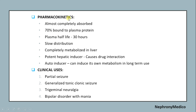Pharmacokinetics of carbamazepine: it is almost completely absorbed and 70% bound to plasma protein. Plasma half-life is about 30 hours. There is slow distribution and it is completely metabolized in the liver. It is a potent hepatic enzyme inducer and causes drug interactions. Clinical uses include partial seizure, generalized tonic-clonic seizure, trigeminal neuralgia, and bipolar disorder with mania.